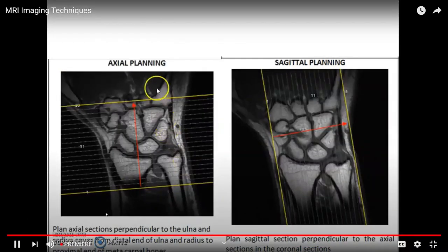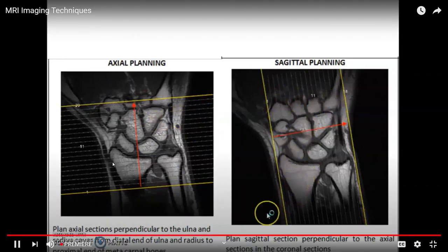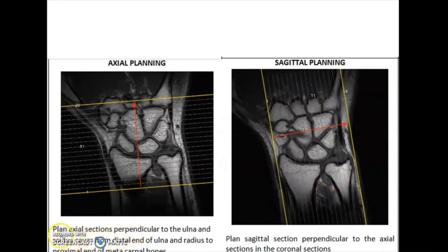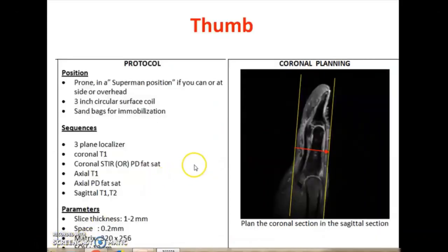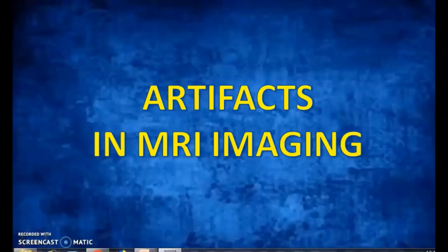For the wrist, plan the axial section perpendicular to the ulna and radius, covering from the distal end of the ulna and radius to the proximal end of the metacarpal bones. Sagittal planning is done perpendicular to the axial section in coronal sections. Surface coils can be used for the thumb, with coronal, axial, and sagittal plans. With the axial, we are now in the final section of today's class.